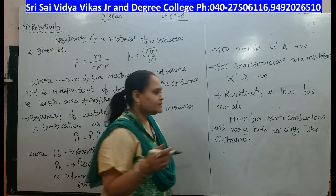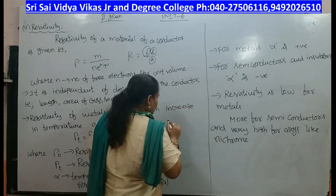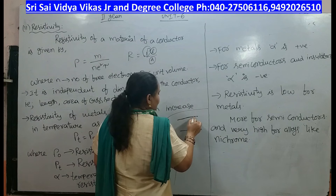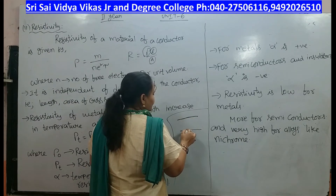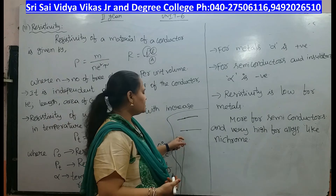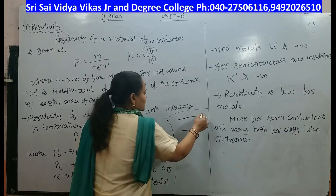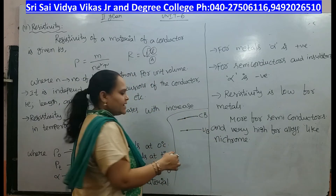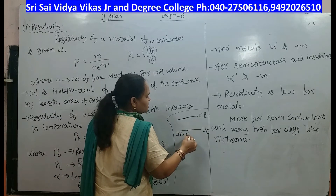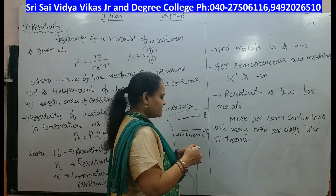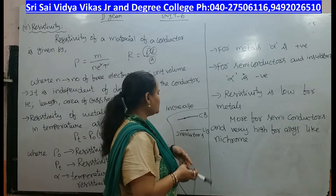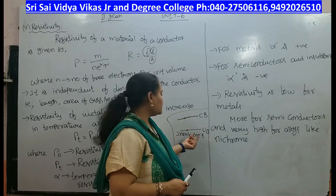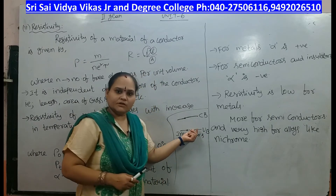What is meant by conductors, semiconductors, and insulators? There are two energy bands: the valency band and the conduction band. In insulators, the energy gap between the valency band and conduction band is very high, so electrons cannot reach from the valency band to the conduction band even when energy is supplied — this gap is called the forbidden gap.